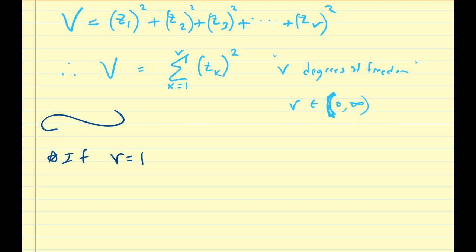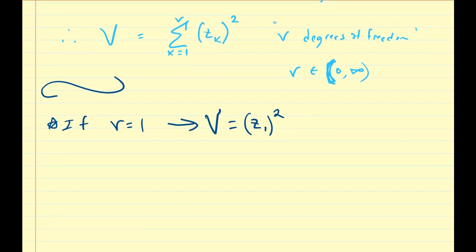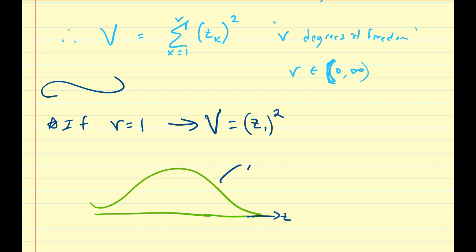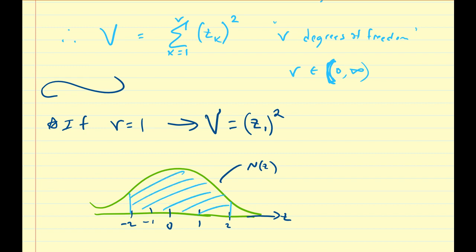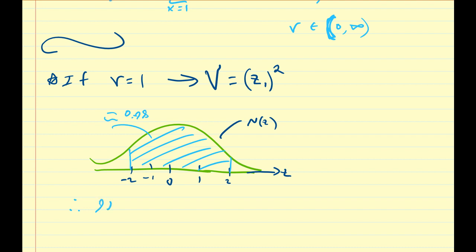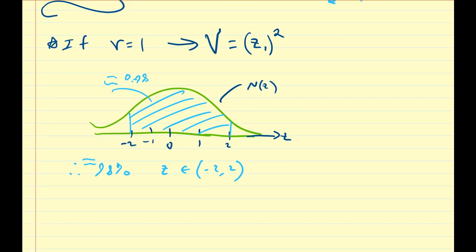So let us assume nu equals 1 — that is, I select one standard normal random variable. If that is true, then v is going to be equal to z1 squared. We know that if this is the z-axis and this is the standard normal distribution, it's symmetrically defined around approximately three standard deviations. Between two standard deviations, this area is approximately equal to 98%, meaning there's a 98% chance that z is between negative 2 and 2. So there's a 98% chance that v, which equals z1 squared, is going to be between what?